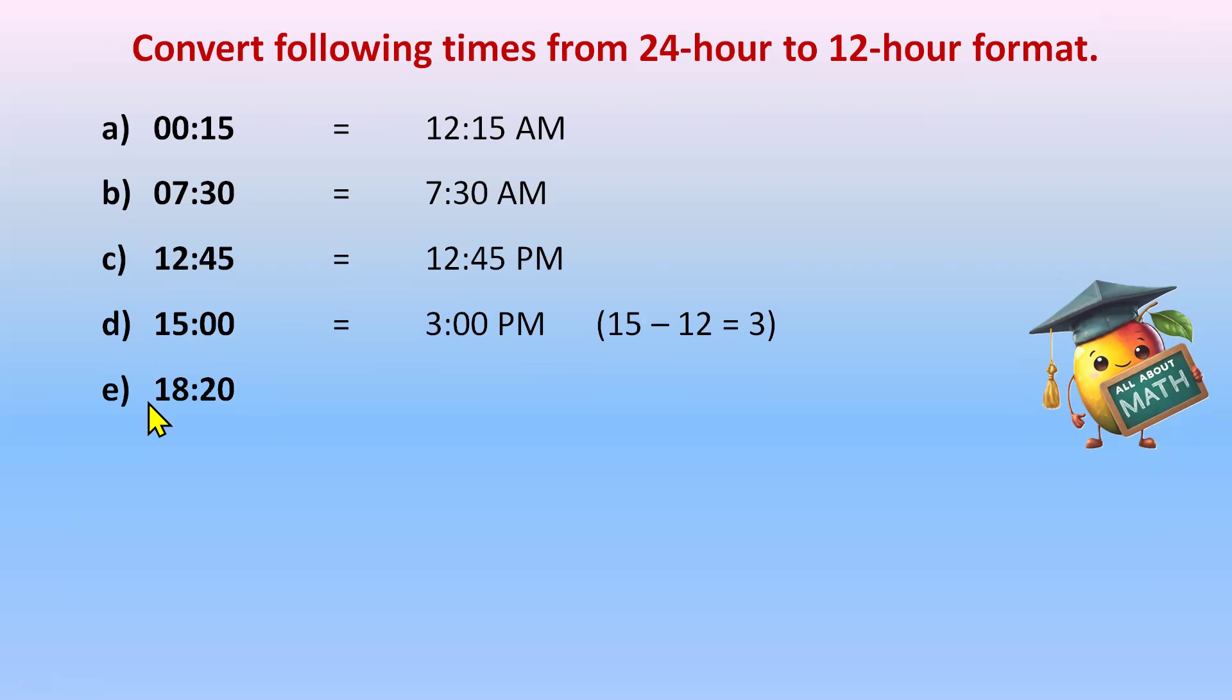18:20. So 18:20, 18 again is greater than or more than 12. So it means 18 minus 12 with P.M., so it's 6:20 P.M.